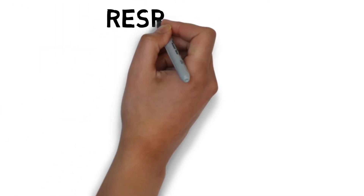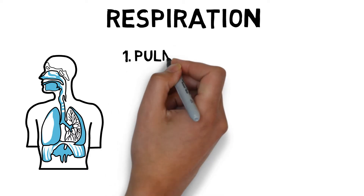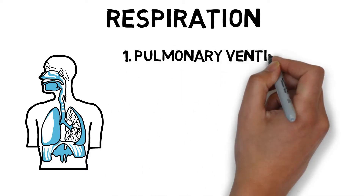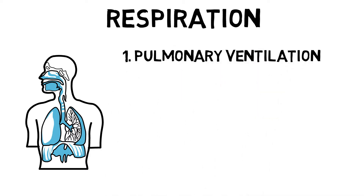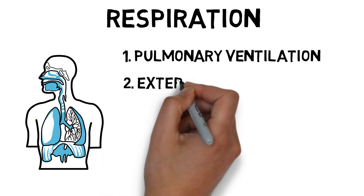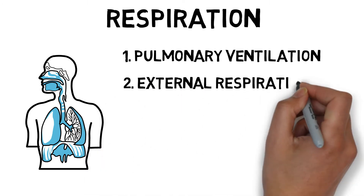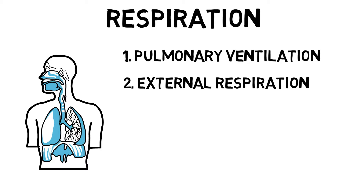In order for respiration to occur, the following processes must happen. Pulmonary ventilation, which is the continuous movement of air into and out of the lungs. External respiration, which is the exchange of oxygen from the lungs to the blood and carbon dioxide from the blood to the lungs.